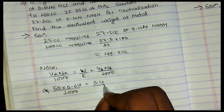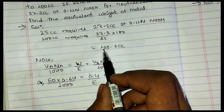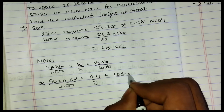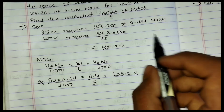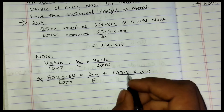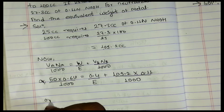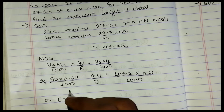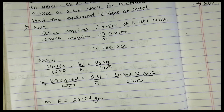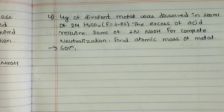Solving the equation: 0.032 = 0.4/E + 0.012012. Therefore 0.4/E = 0.032 − 0.012012, giving E = 0.4 / 0.019988 ≈ 20.01. The equivalent weight of the metal is approximately 20.01.